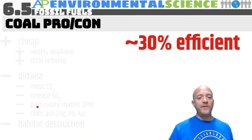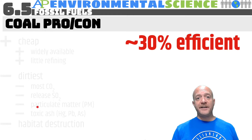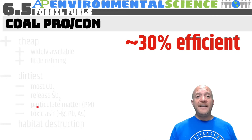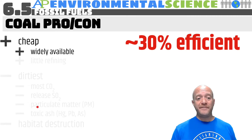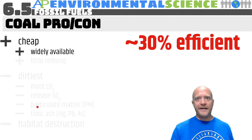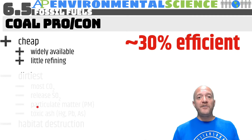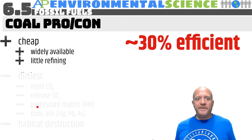Coal-fired power plants are about 30% efficient, and most of our electricity is generated by burning coal. That's unfortunate because coal is the dirtiest fossil fuel. However, coal is cheap, widely available — the U.S. has the largest reserves — and requires little refining. Basically, you dig it up and burn it.